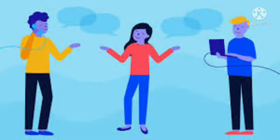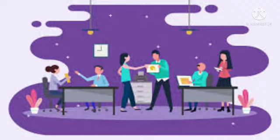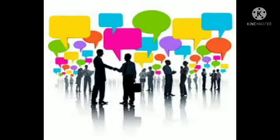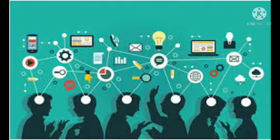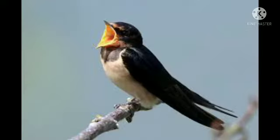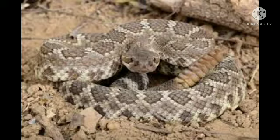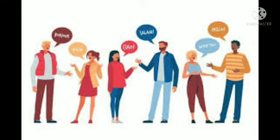First we will learn what is communication. Communication is an exchange of meanings between individuals through a common system of symbols. Communication is not prevalent in human beings only — animals also communicate among themselves. Communication exists between insects, birds, and other animals.